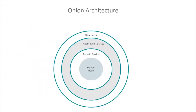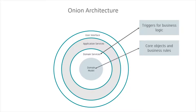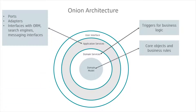Let's have a closer look at the Onion architecture. So at the core, we have our domain model, which is what we'll be modeling during the course. It holds the core objects and business rules. This is layered by the domain services, which are the triggers for the business logic. Then we have our application services layer, which include things like ports, adapters, interfaces with the ORM.